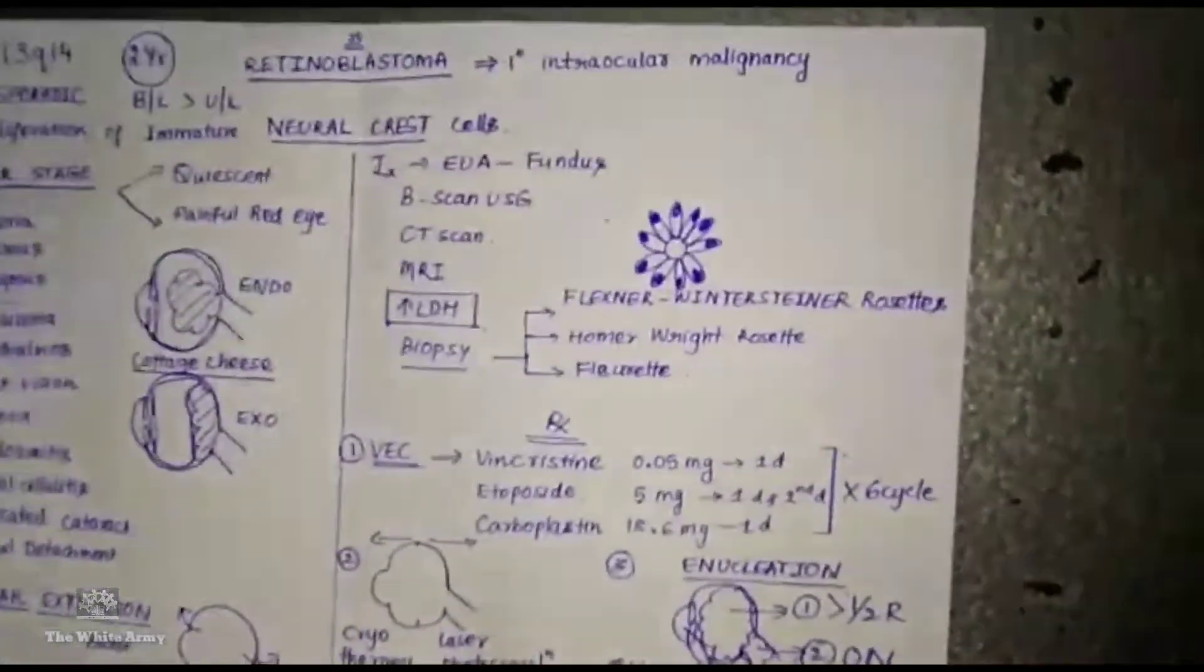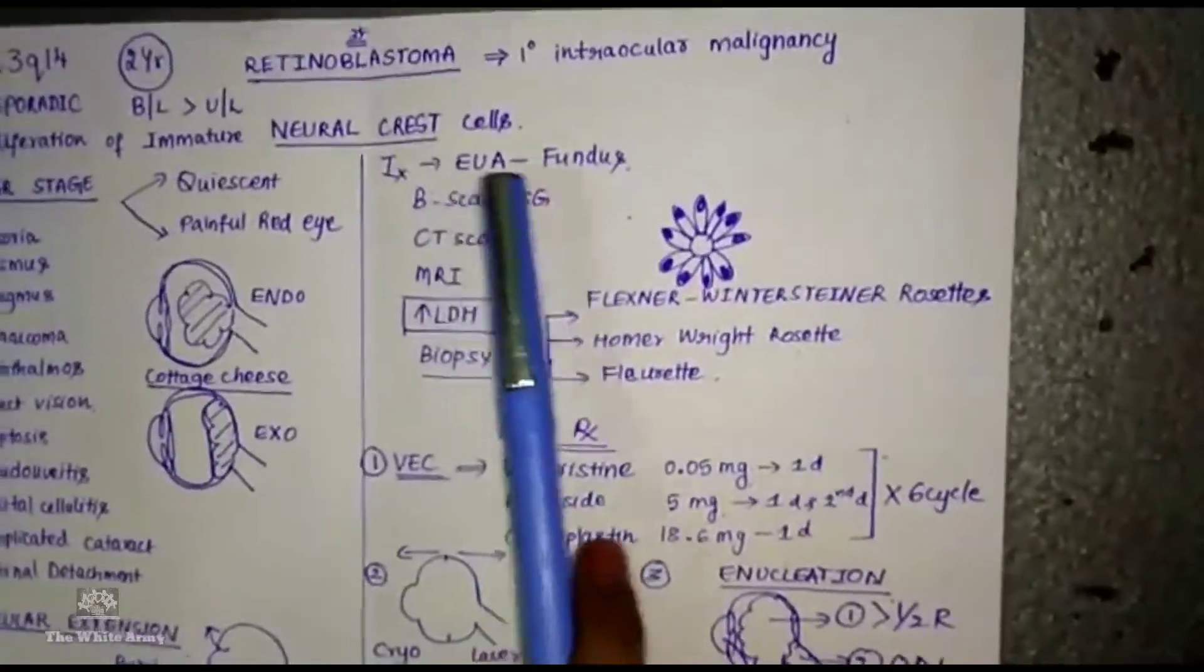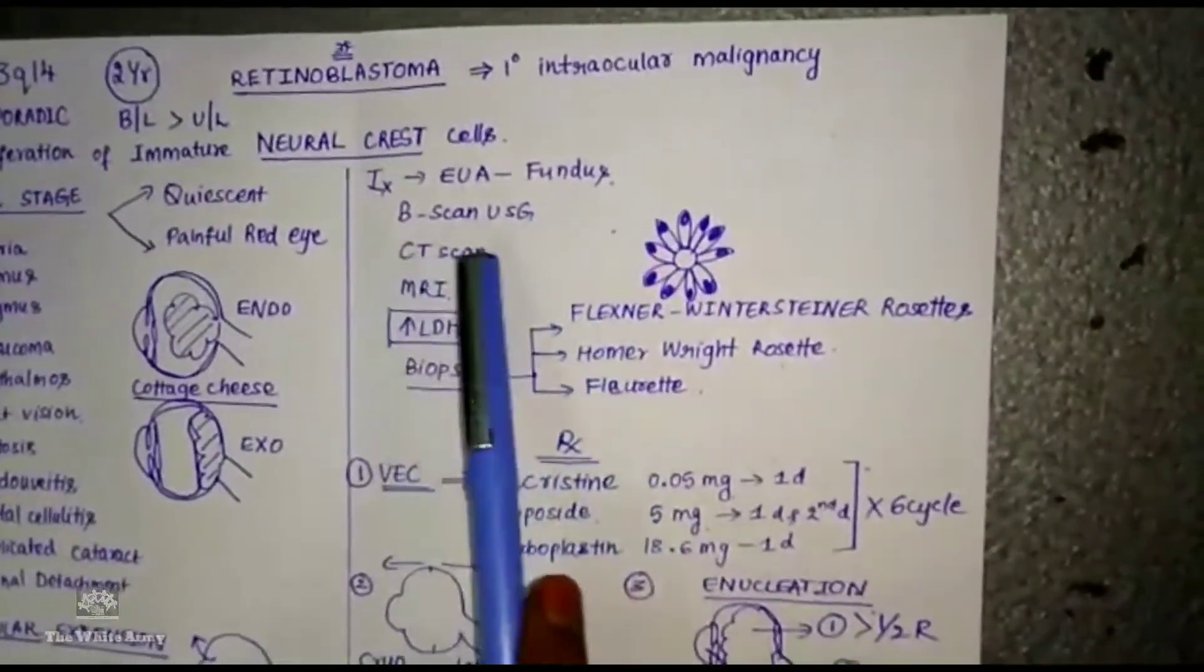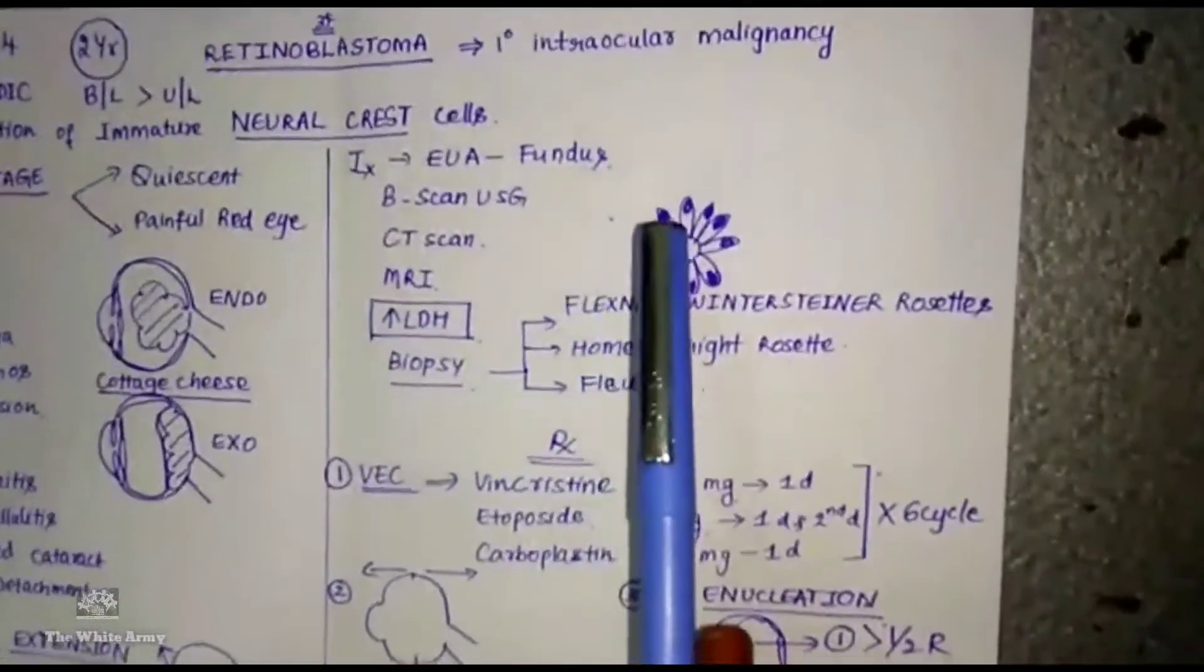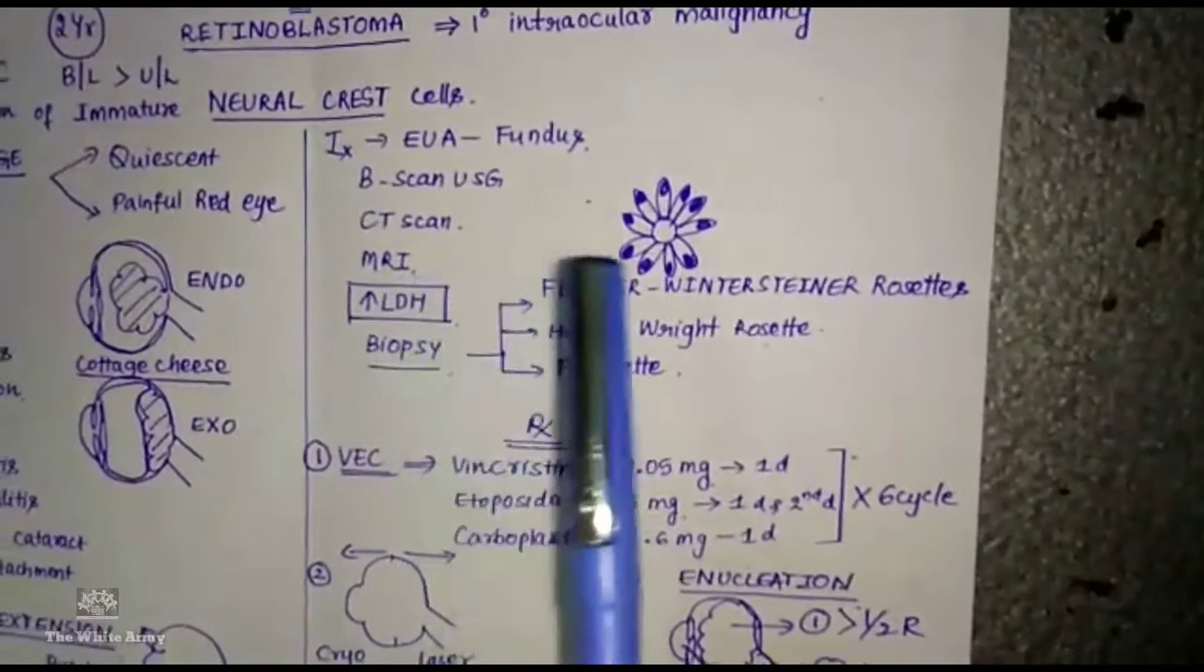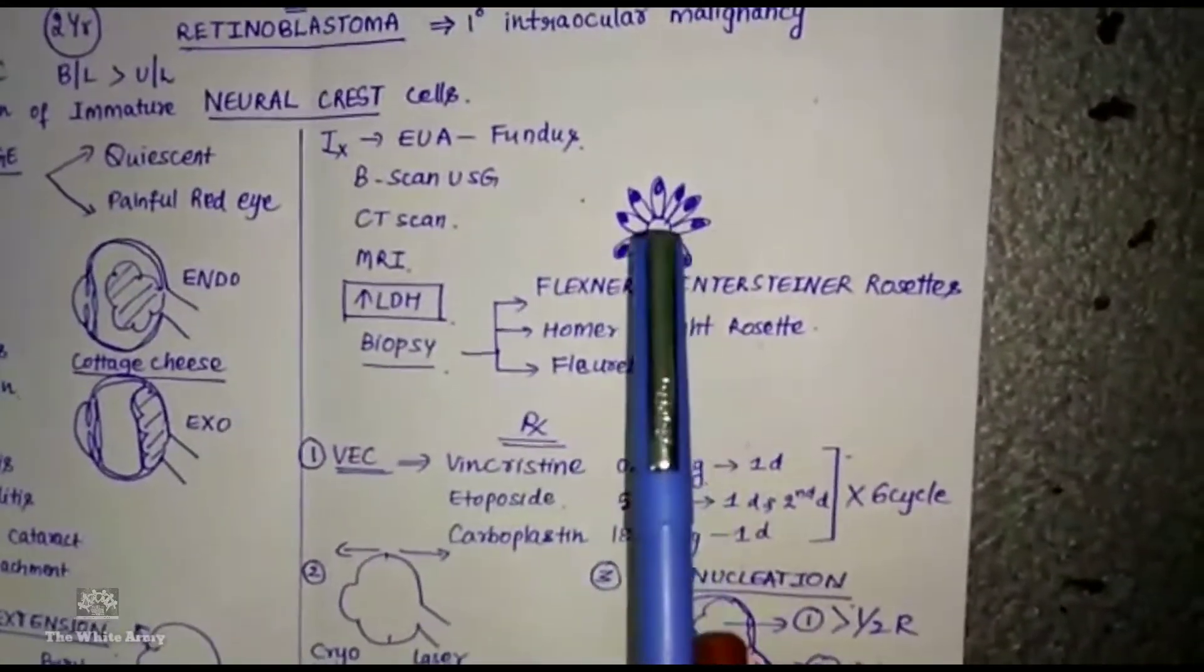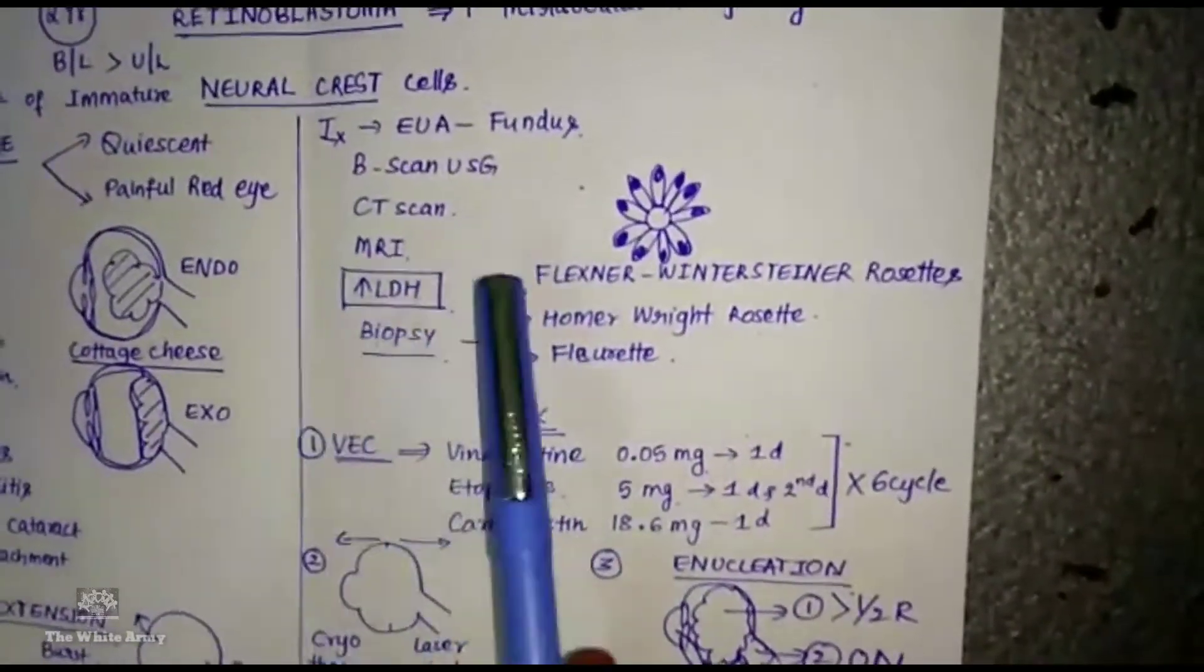When the patient presents, the investigations you do are examination under anesthesia and fundus examination. Then you go for B-scan ultrasound to see tumor size and extension. Then you will do CT scan to look for calcification, intraocular metastasis, extraocular extension, and intracranial metastasis. MRI is also done.